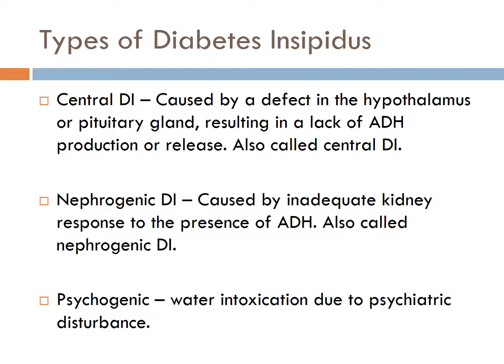There are three types of diabetes insipidus. The first is central or neurogenic DI, which is caused by a defect in the hypothalamus or the pituitary gland resulting in a lack of ADH production or its release. Examples include brain tumors, CNS infections, brain lesions, and head injury.